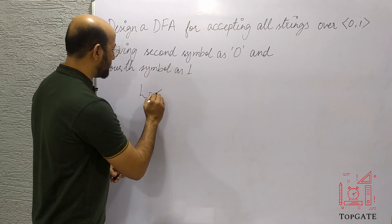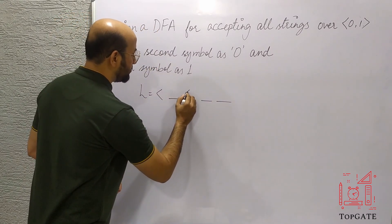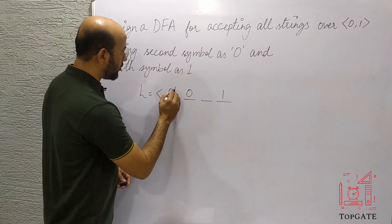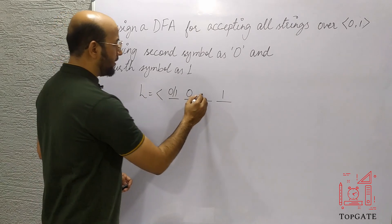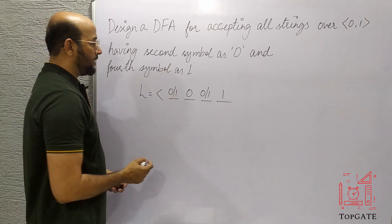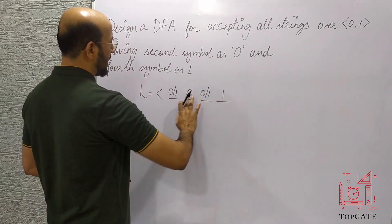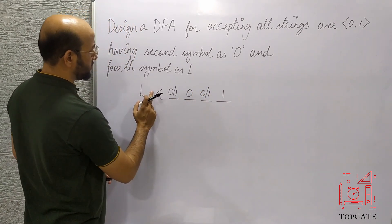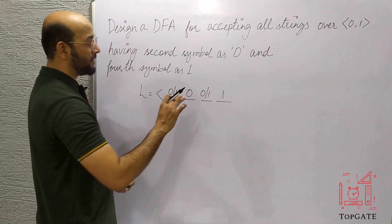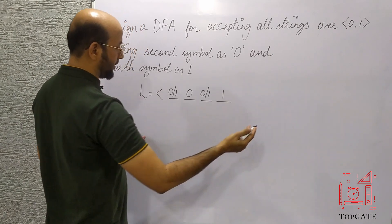For a minimum string in the language, I need a 4-length string. The second symbol should be 0, and the fourth symbol should be 1. In the first place I can have 0 or 1, and in the third place I can have 0 or 1. After the fourth position I can have any symbol, but before the fourth position the constraints are fixed — second must be 0 and fourth must be 1.